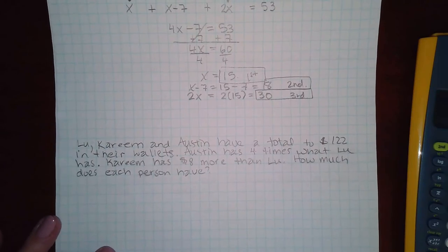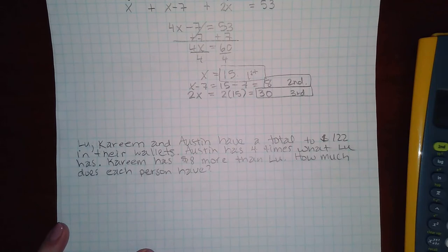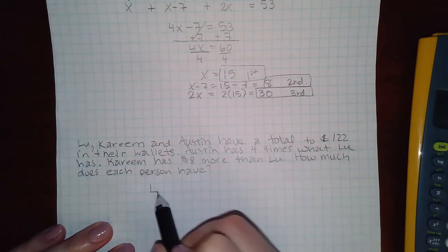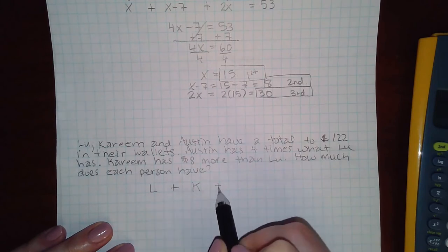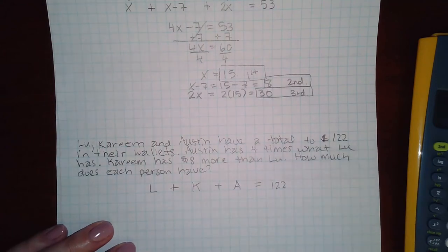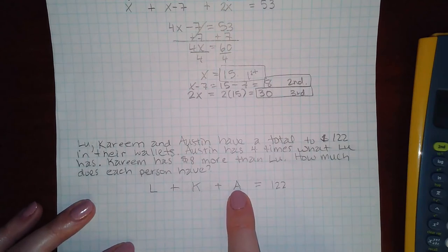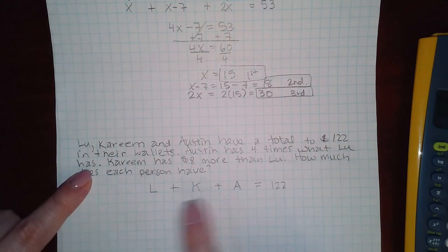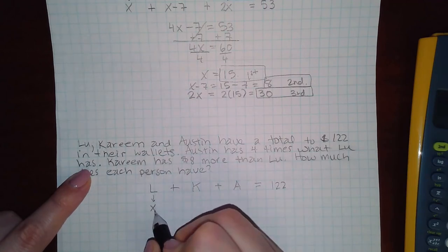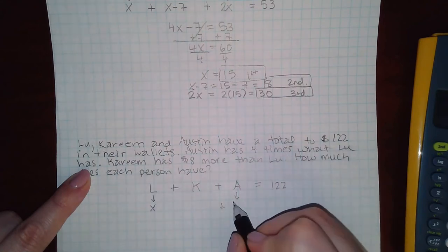Here we have another word problem. It says Lou, Kareem, and Austin have a total of $122 in their wallets. So I have L for Lou, plus K for Kareem, plus A for Austin, and together they should have $122. It says Austin, they're talking about this guy, has four times what Lou has. So they're using Lou to describe what Austin has, which means Lou should be x. And then Austin, because it's four times that of Lou, would be 4x.